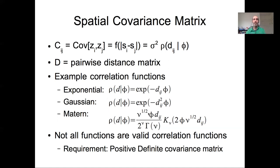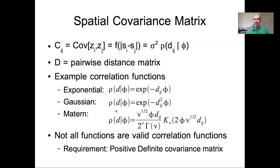Examples of correlation functions include the exponential correlation function, the Gaussian correlation function, and the more flexible Matérn function with multiple parameters phi, v, and k. It's worth reminding you that not all functions you could write down to describe correlation — even those bound between minus one and positive one — are actually valid correlation functions. You need the correlation function to yield a positive definite covariance matrix, and that proof is non-trivial. So I recommend using correlation functions that have already been proven to be valid spatial covariance models.